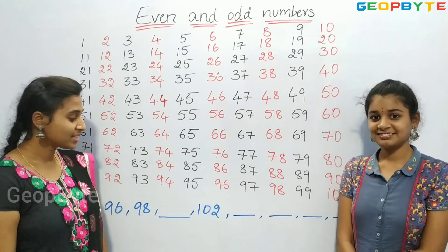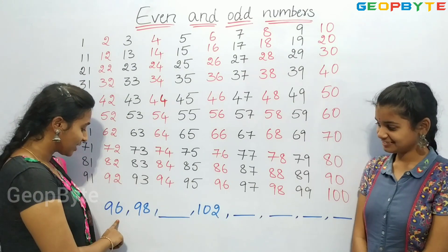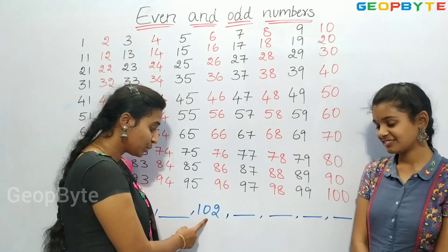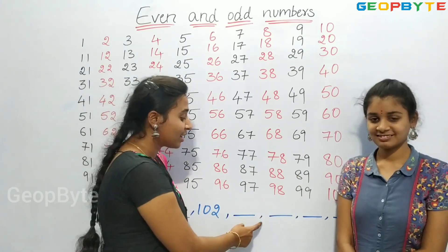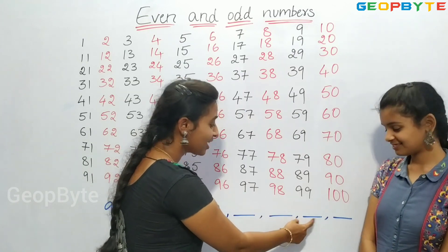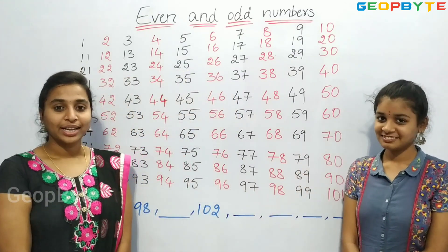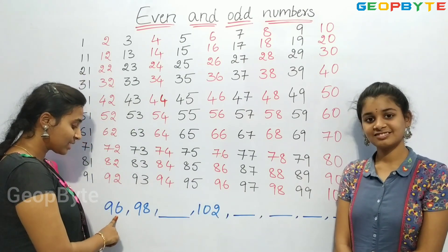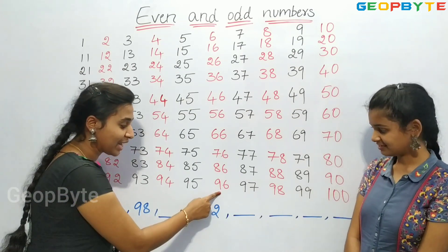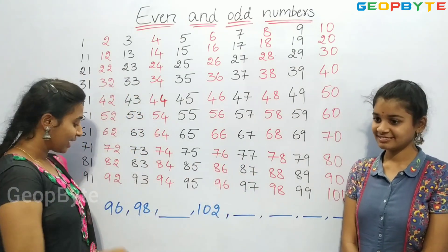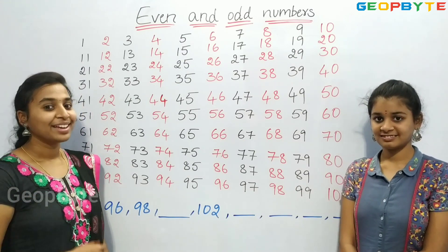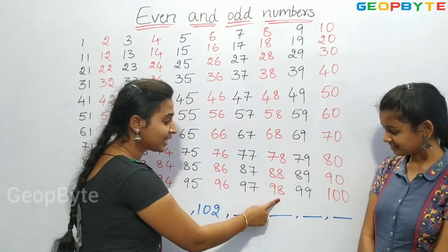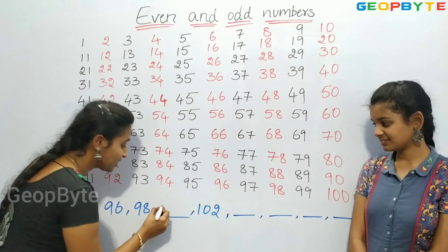Children, now let us see this sequence: 96, 98, dash, 102, dash, dash, dash. Let us fill these blanks. We have 96 and 98. Let us add 2 to 96 — we get 97, 98. Similarly, after 98 we have 100. Let us write 100.